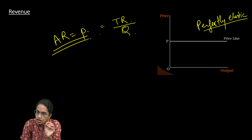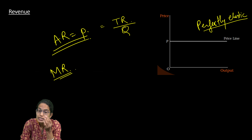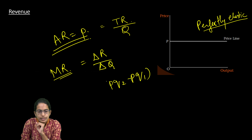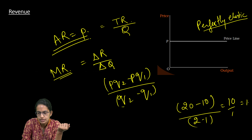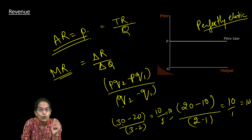Marginal revenue is the increase in total revenue per unit increase in output — that is, change in revenue divided by change in quantity, or (TR2 − TR1) / (Q2 − Q1). For example: (20 − 10) / (2 − 1) = 10/1 = 10. Similarly, (30 − 20) / (3 − 2) = 10/1 = 10. So marginal revenue is also 10.